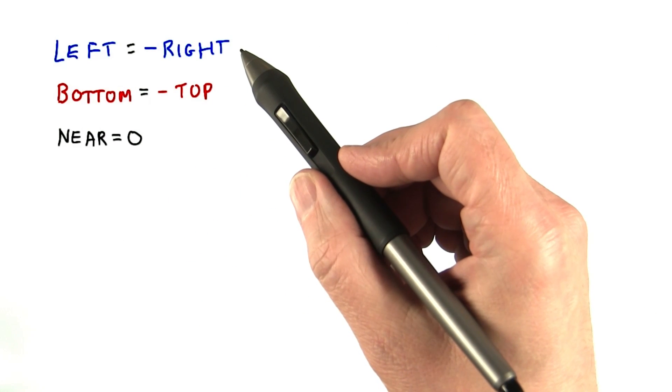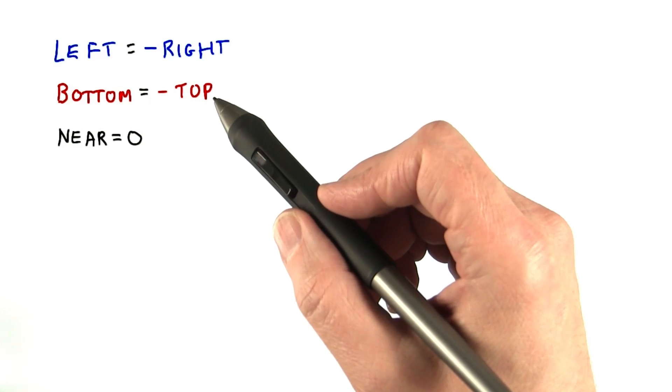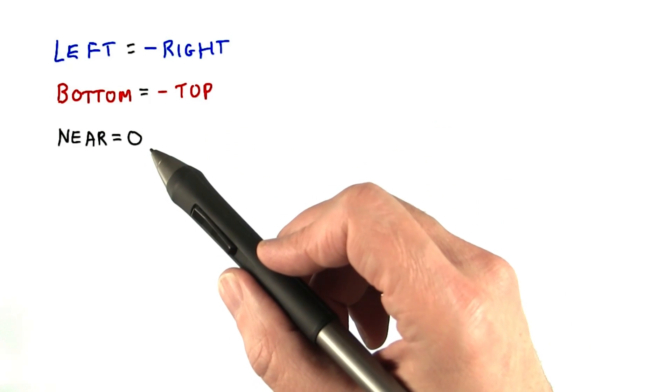In practical terms, we usually make the left and right be opposites, along with the top and bottom. The near value is often zero, though it can be any number.